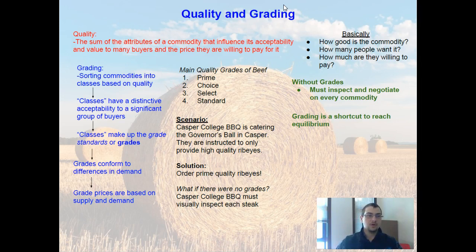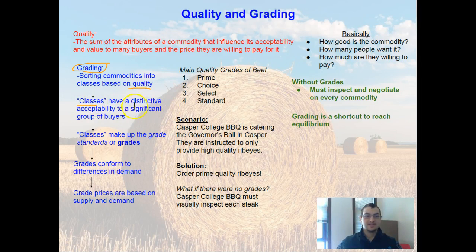So how do we come up with quality? We do that by grading. Grading is sorting commodities into classes based off of their quality — putting them in different regions or areas of how good that commodity is. These classes then have a distinctive acceptability to a significant group of buyers, so we divide the commodity into classes based off of how many people want it.